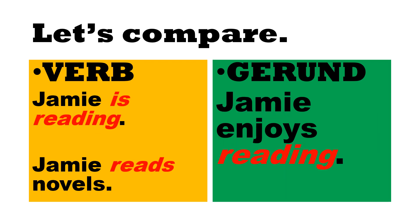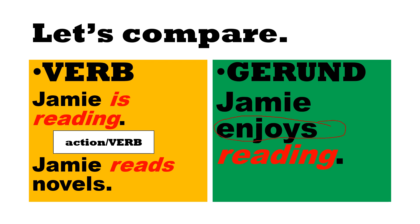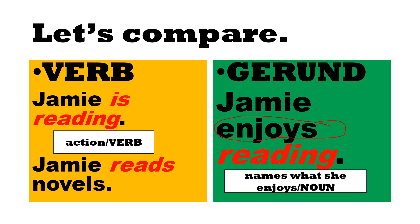Let's explain it further with another example. 'Jami is reading' — here it functions as a verb or action. What does Jami do? She reads. On the other hand, in 'Jami enjoys reading,' the verb is 'enjoys,' so 'reading' cannot be the verb or the action. What does Jami enjoy? That is reading. So here it names what she enjoys, meaning it's not a verb but a noun.